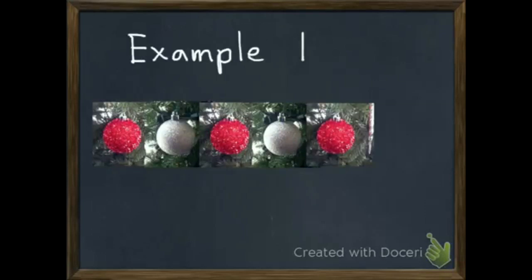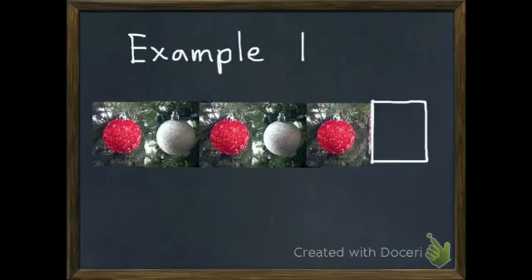In our first example, I've been decorating my Christmas tree, and I wanted to find a good pattern so that the colors were spread out evenly. So I started with a red, then silver, then red, then silver, then red. So what would be the next thing in my pattern? This is a pretty simple pattern since it's just going every other color. So if I just had a red, my next ornament would be silver.